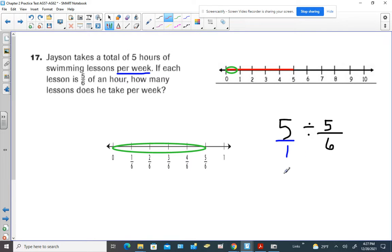Step two is to keep, change, flip. We're going to keep the five over one. We're going to change the division to multiplication. And this gets flipped to its reciprocal, which would be six over five.